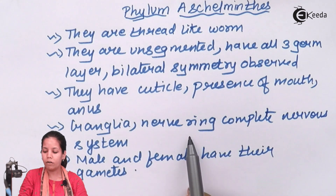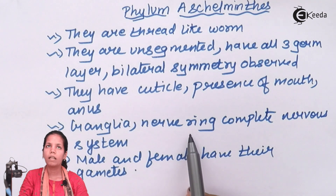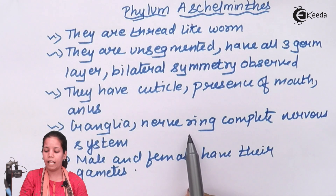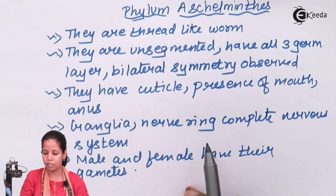Ganglia and nerve rings are present in their nervous system. The ganglia and nerve rings associate and help in the transduction of impulses.